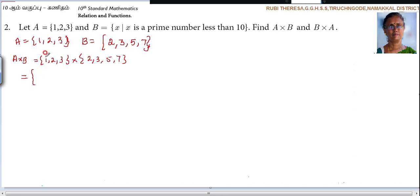So 1 is paired with 2, 3, 5, 7. So (1,2), then (1,3), (1,5), (1,7). Next 2 is paired with 2, 3, 5, 7. (2,2), (2,3), (2,5), (2,7). Next 3. 3 is paired with 2, 3, 5, 7. So (3,2), (3,3), (3,5), (3,7).